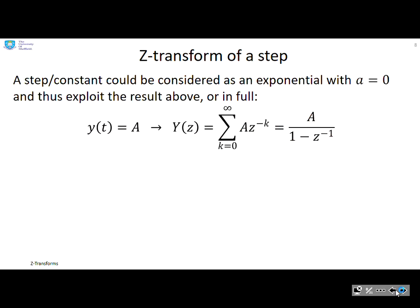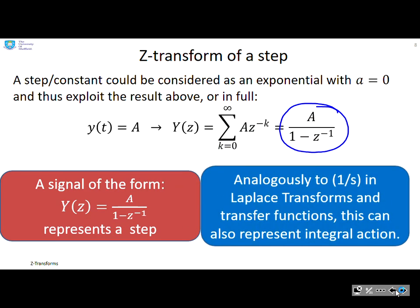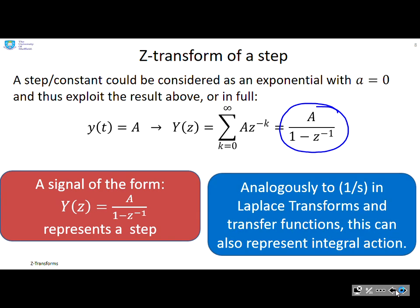A step or constant can be considered as an exponential with a equals zero — that's just a shortcut — and you'll quickly see the Z-transform is A over 1 minus z to the minus 1. So if you see something like A over 1 minus z to the minus 1, that's representing a step. As a by the by, just as 1 over s in Laplace can represent a step or integral action, something over 1 minus z inverse in discrete time can also represent integral action.